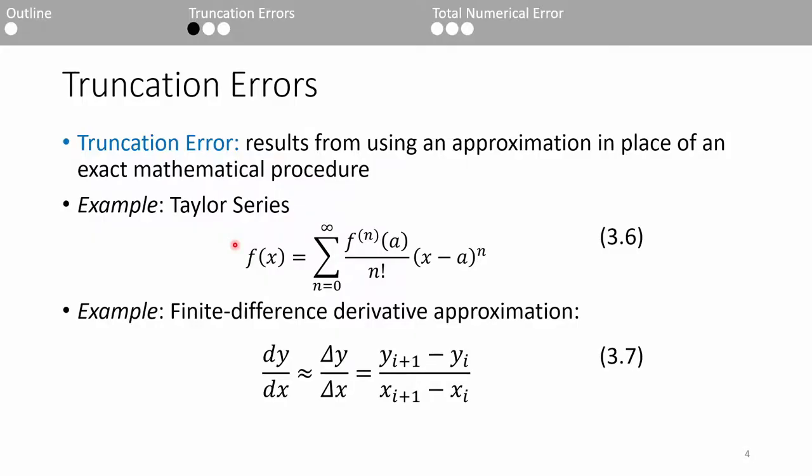Roundoff errors come from the computer's precision limitations. On the other hand, truncation errors come from making a numerical approximation.